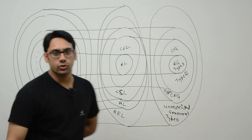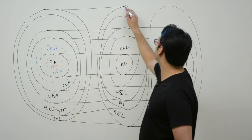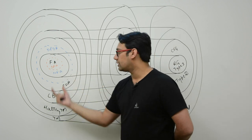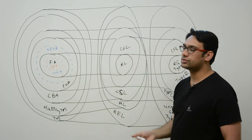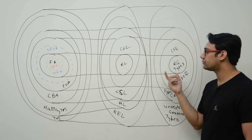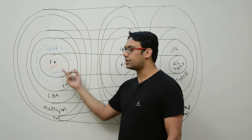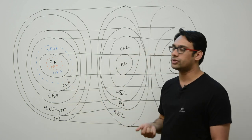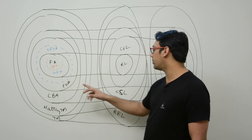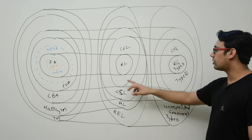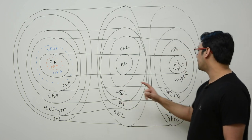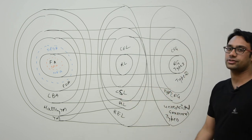We are going to explore this complete subject from this point. Initially we studied finite automata, then regular languages, then regular grammar, then representations of regular languages which are regular expressions, then pushdown automata. After pushdown automata we will study context-free languages — every language accepted by pushdown automata is a context-free language — and then we will make a classification for context-free grammars.